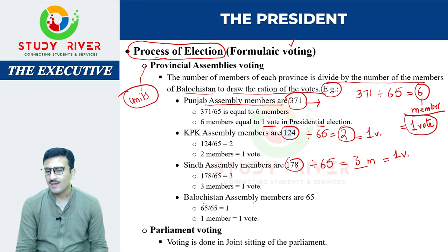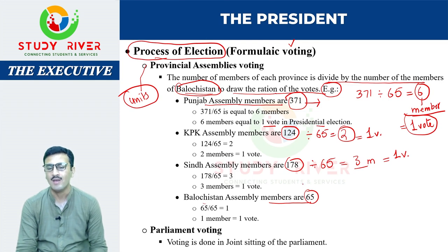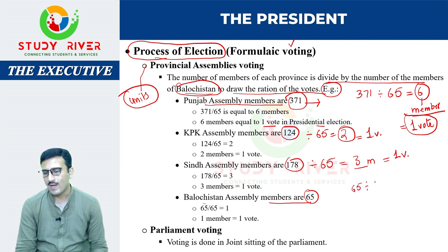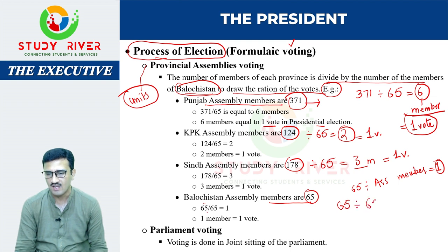Balochistan assembly ke jo members hain woh 65 hain. Ab benchmark bhi banaya gaya hai Balochistan assembly ko — yeh maine upar likha hua hai. Balochistan assembly ke members ko benchmark banaya gaya hai. Sari assemblies ke members ko 65 se divide kiya jata hai — 65 divided by assembly's members — jo bhi answer aaye, woh equal to one vote for presidential election. Balochistan ke 65 members hain, toh 65 ÷ 65 = 1 — one member of provincial assembly of Balochistan would be equal to one vote in presidential election.